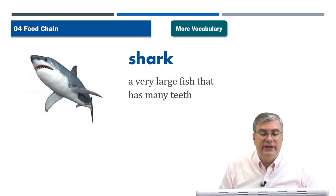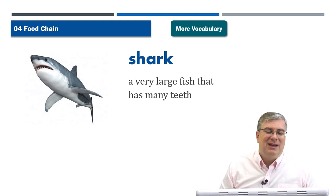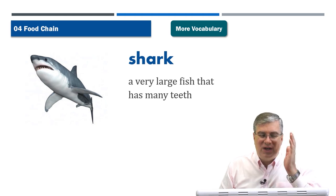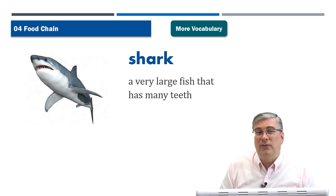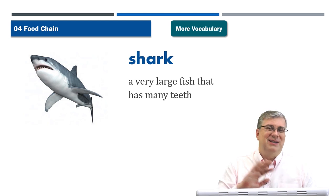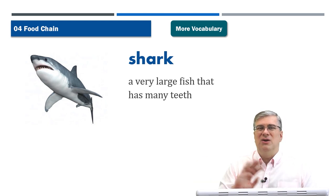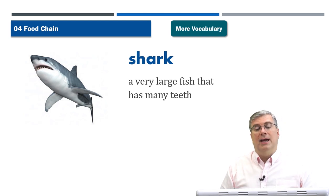'Shark' — a very large fish that has many teeth. A shark is a predator because it's very big, powerful, and has many teeth. Be careful when swimming in areas that do have sharks. Most beaches in the world — 99% — you don't have to worry, but in some places you do. Just know whether there are shark warnings in the area you're visiting. Listen to the news or local warnings.